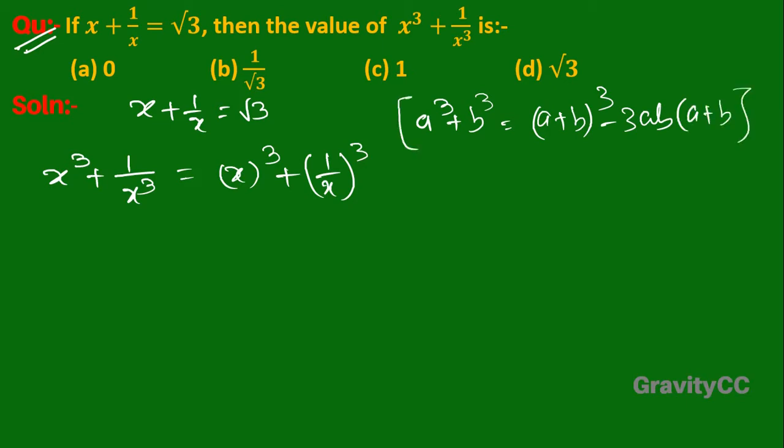So now we apply it here. It will be (x + 1/x)³ - 3 × x × (1/x) × (x + 1/x). So (√3)³ minus 3 times √3.